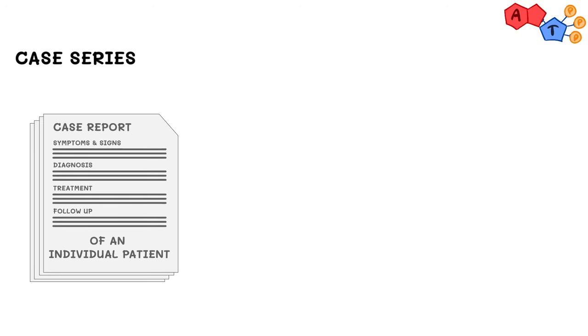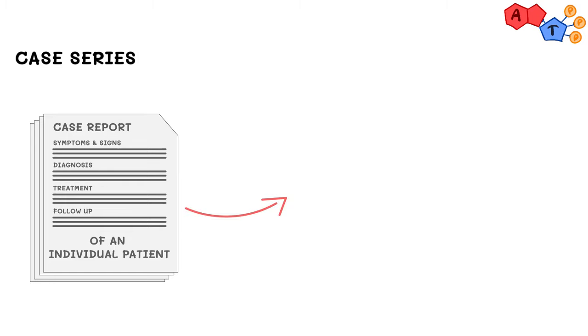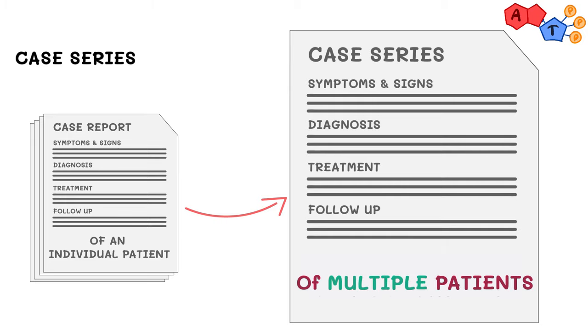A case series can be thought of as similar case reports being lumped together. Instead of making four separate case reports describing a certain cardiovascular condition, you can lump them into one case series if there's enough similarities between the participants.